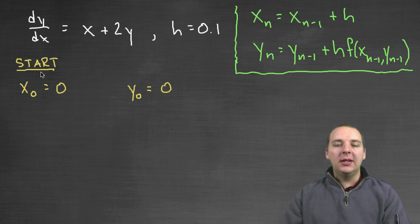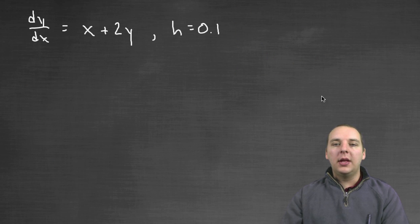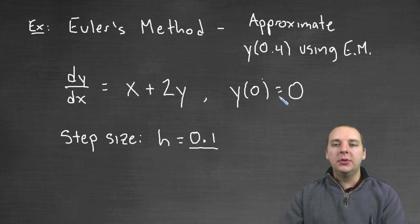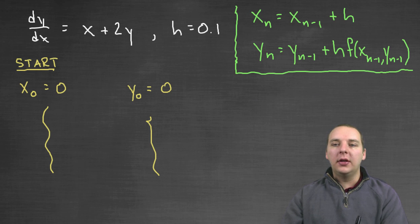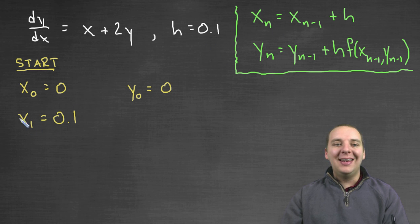And then this formula here will generate the next y value based off of the previous y values. So when we do Euler's method, it's very computational. We'll have a start to our program, and then we're going to run Euler's method and generate the rest of these points. So our initial condition is where we start, it was 0 for x and 0 for y.